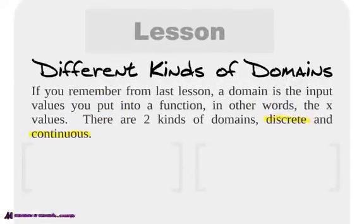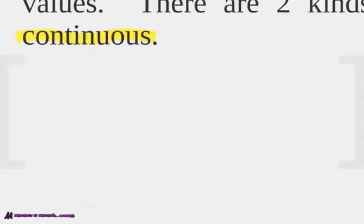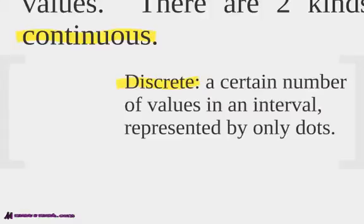There are two different kinds of domains. One is called discrete, and the other one is called continuous, and you will need to know both of these. Let's look at particular examples first, and we'll talk about why they are discrete, like this one. This one is discrete. It's a certain number of values in the interval, represented by only dots.